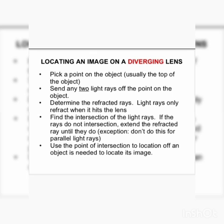Now, locating an image on a diverging lens: pick a point on the object — usually the top of the object — and send any two light rays from it. In the diverging lens case, first determine where your object is, then send two rays of light. You need to know where the refracted rays will be. Remember, light rays only refract when they hit the lens.